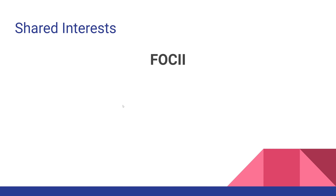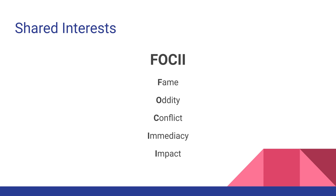Another way you can group people is by their shared interests, and when we talk about shared interests, we are talking about foci — fame, oddity, conflict, immediacy, and impact. All of these elements are things that people are generally interested in. How each item is defined may change depending on what group you're talking to. You would focus everything based on these elements and how they relate to the other aspects of your audience.